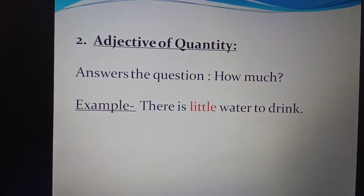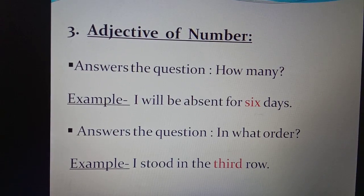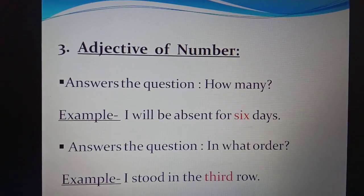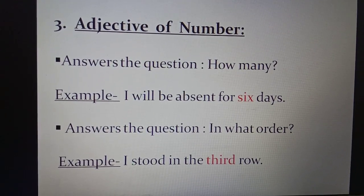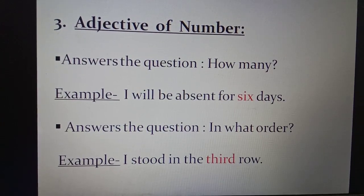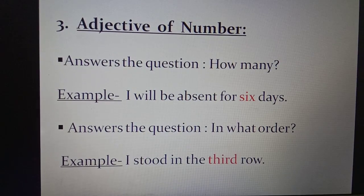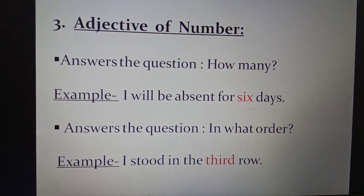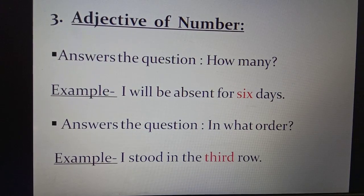Adjective of number: numbers can be counted — 1, 2, 3, 4, etc. Adjective of number is always used with countable nouns. It answers the question: how many? For example — 'I will be absent for 6 days.' Days is a countable noun and 6 is the adjective of number.